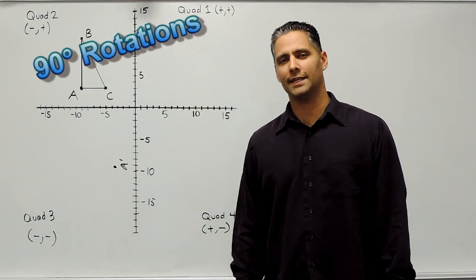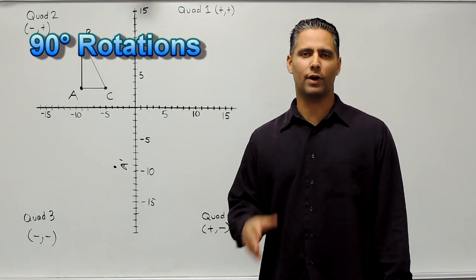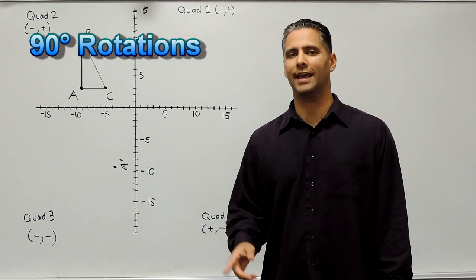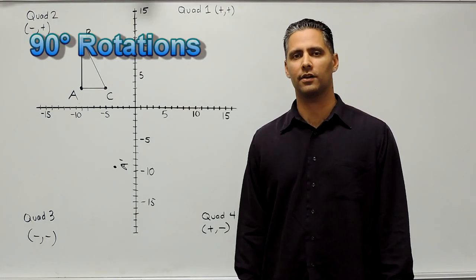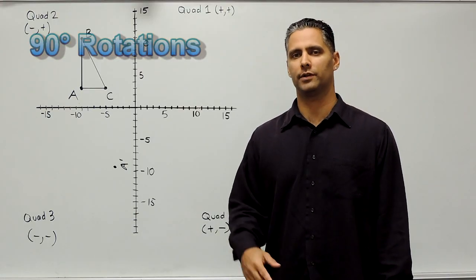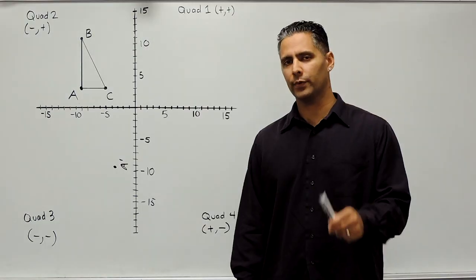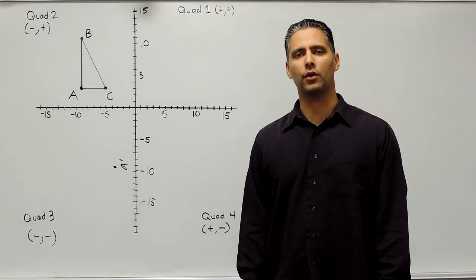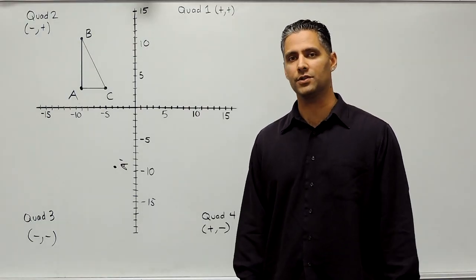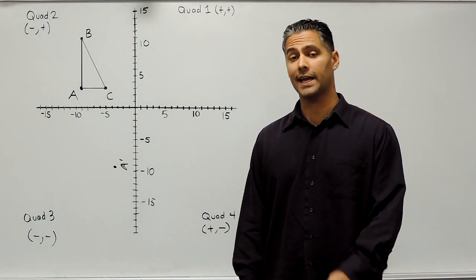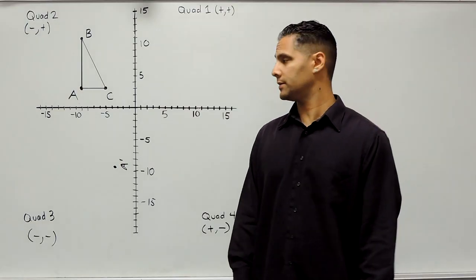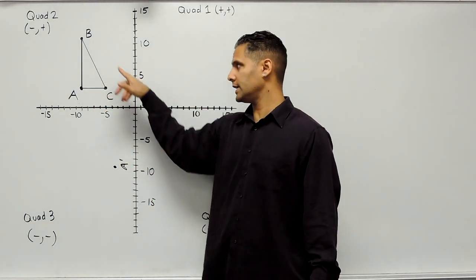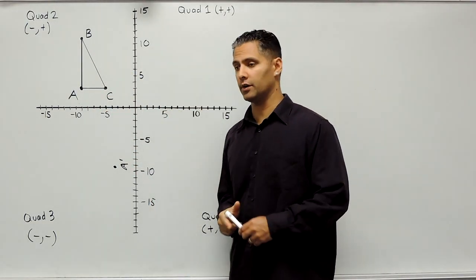Hey, this is Mr. Masonette, and today we are going to practice rotating an object 90 degrees clockwise and counterclockwise on the coordinate plane. The first thing we have to do is identify the current location or coordinates of each point of the object in question. So let's figure out where point A, B, and C are currently located.